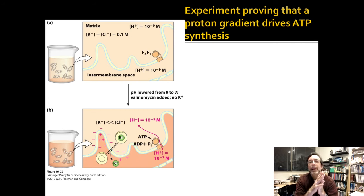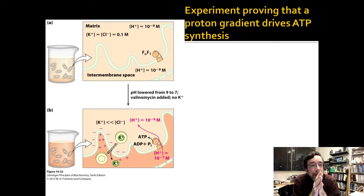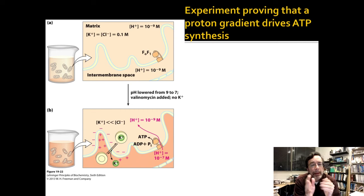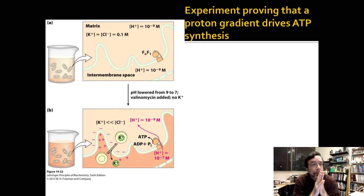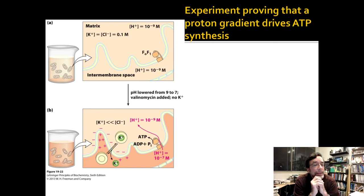This is an important experiment — it proved that a proton gradient drives ATP synthesis. What you do is separate out intact mitochondria and soak them in a pH 9 solution with a lot of potassium in it. You put the mitochondria in there long enough for them to equilibrate so that they are pH 9 inside and outside. They're still functional.